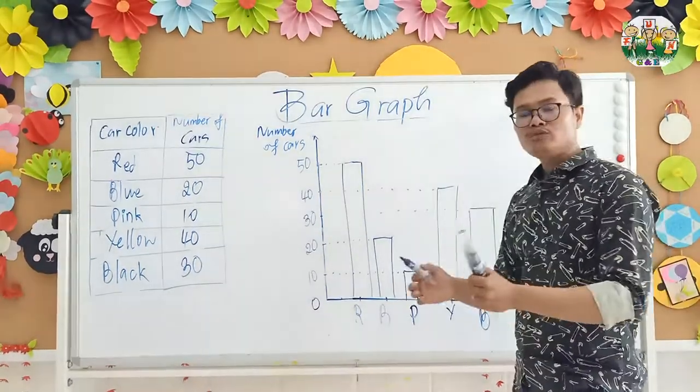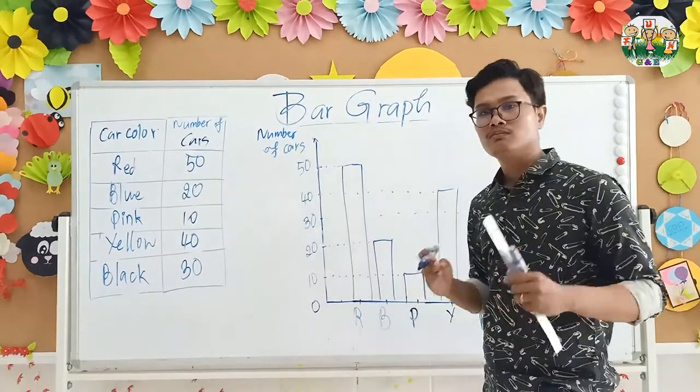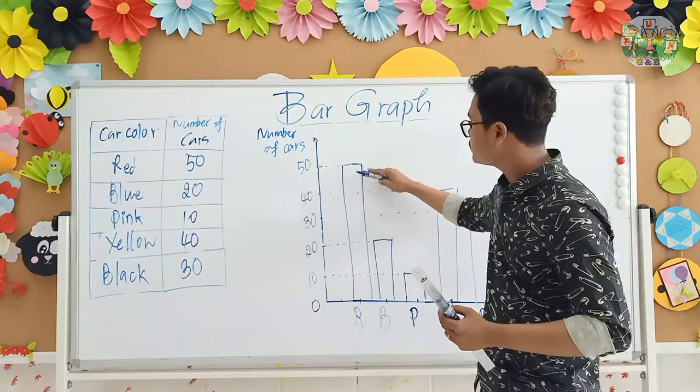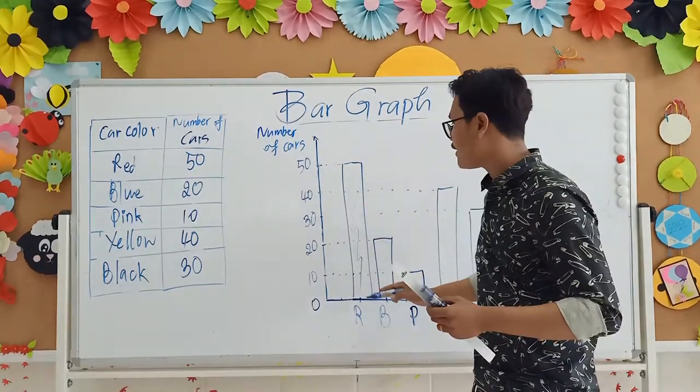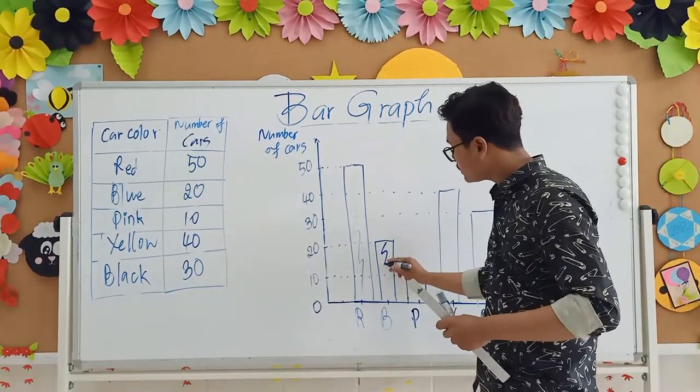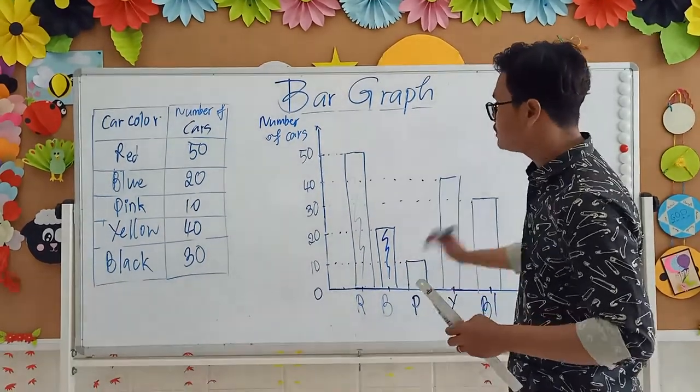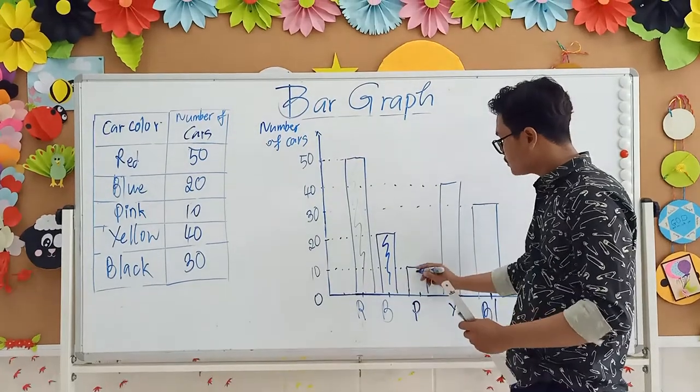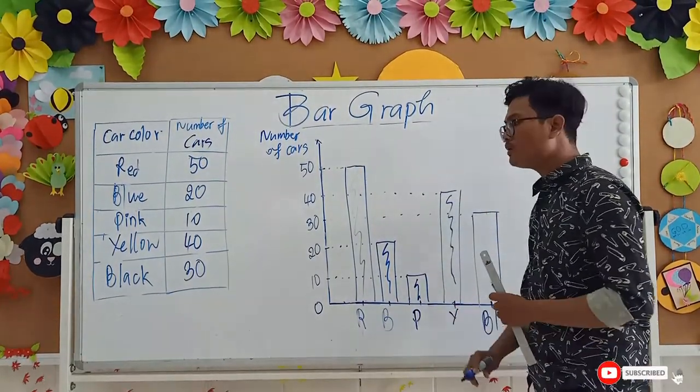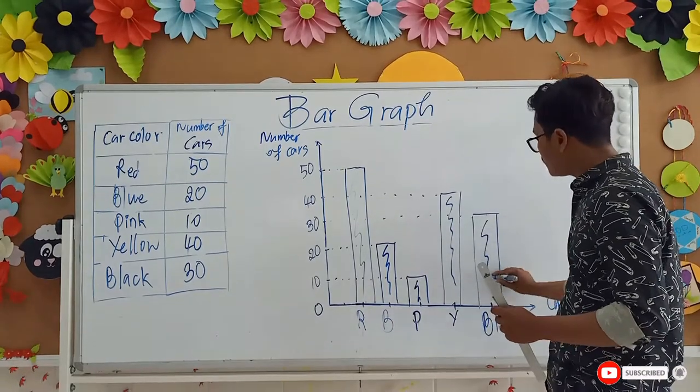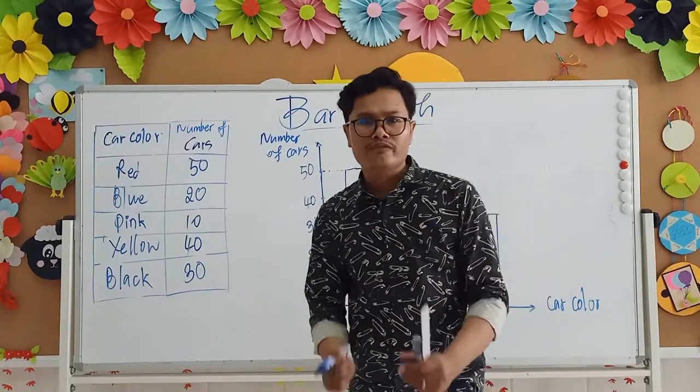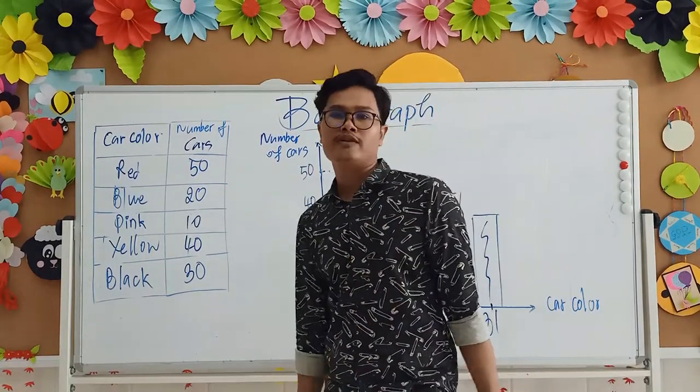That's all. But if you want your bar graph look more beautiful, you need to color. This one red, you need to color with red color. Color your bar graph. This one blue, you need to color with blue. This one pink, color with pink. This one yellow, color with yellow. And this one black, color with black. So your craft will look more beautiful and very interesting one.